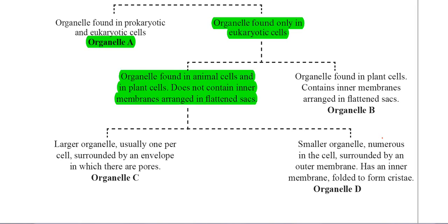Slightly to the left, organelles found in animal cells and plant cells do not contain inner membranes arranged in flattened sacs. This suggests that it's not talking about a chloroplast or mitochondria, because both of those organelles do have an inner membrane. So that description, they wouldn't be a chloroplast or mitochondria.